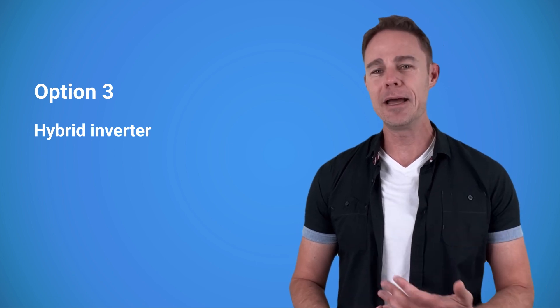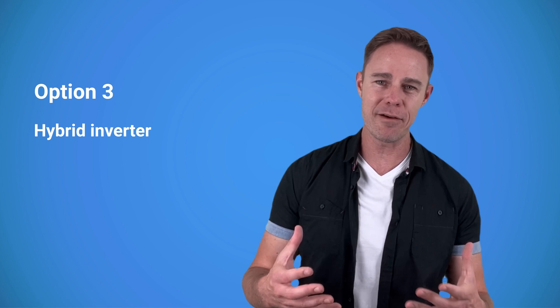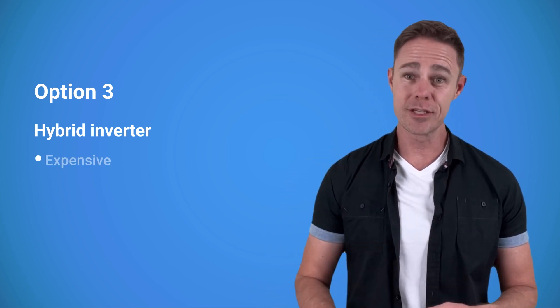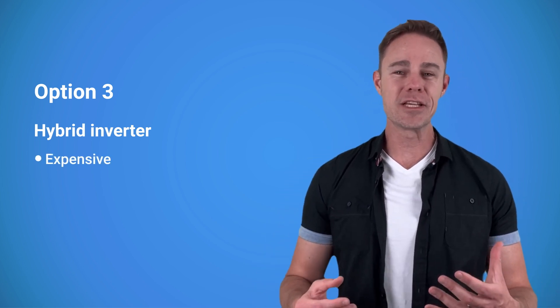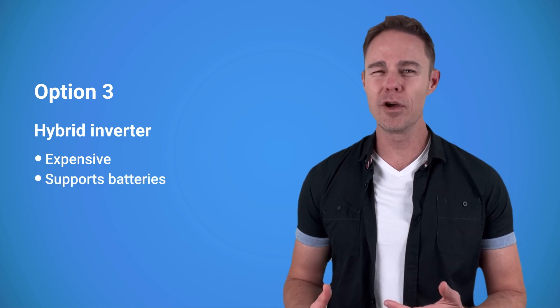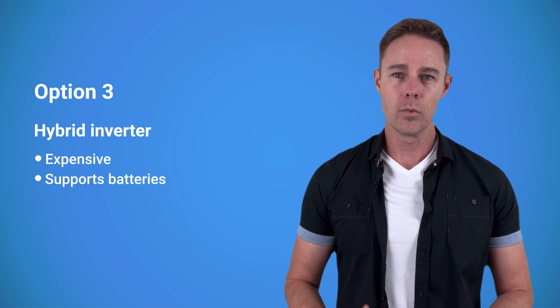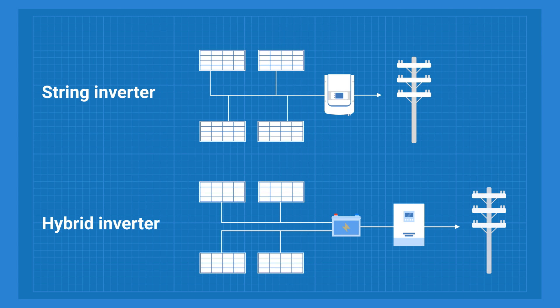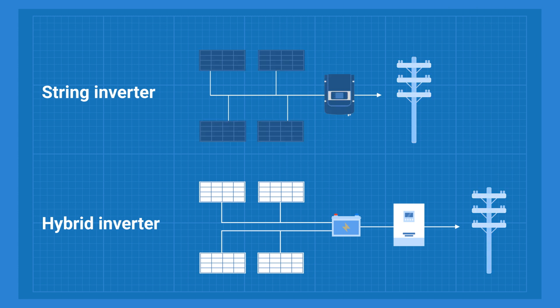What both the standard string inverter and micro inverters can't do is support a DC battery. You can add an AC battery such as the Tesla Powerwall to your system, but if the battery requires direct current, you're going to need a hybrid inverter. Hybrid inverters are the most sophisticated type of inverters and therefore cost the most. Such an inverter can act both as a grid-tie inverter and an off-grid one.